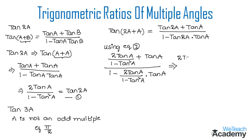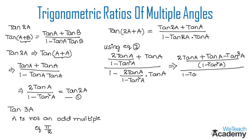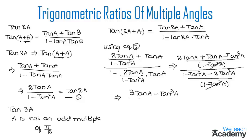Simplifying the numerator: 2 tan a + tan a·(1 - tan²a) = 2 tan a + tan a - tan³a = 3 tan a - tan³a, all over (1 - tan²a). For the denominator, taking LCM gives (1 - tan²a - 2 tan²a) / (1 - tan²a) = (1 - 3 tan²a) / (1 - tan²a). The (1 - tan²a) terms cancel.